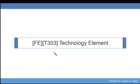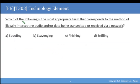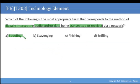This is FET303 Technology Element. Which of the following is the most appropriate term that corresponds to the method of illegally intercepting audio and or data being transmitted or received via a network? Is it a) spoofing, b) scavenging, c) phishing, or d) sniffing?